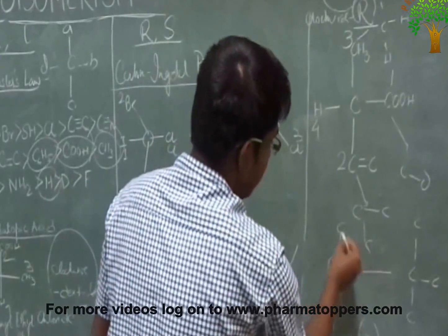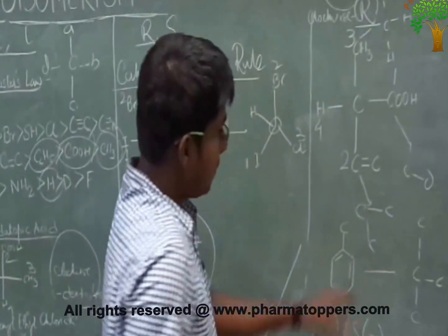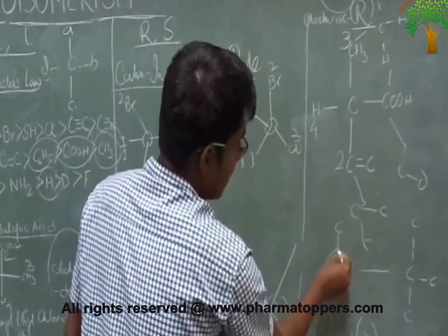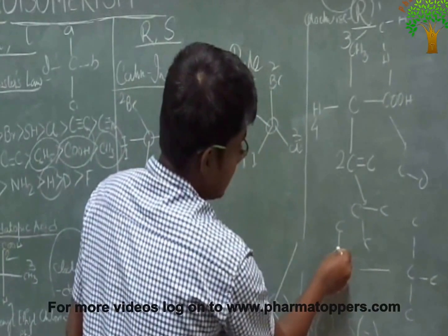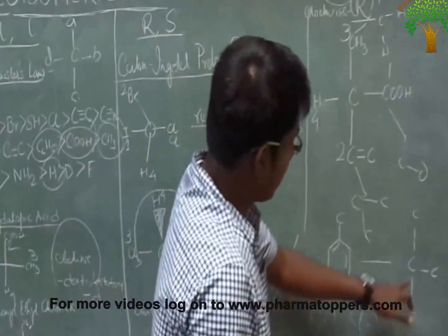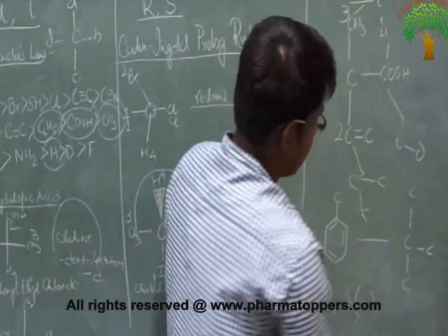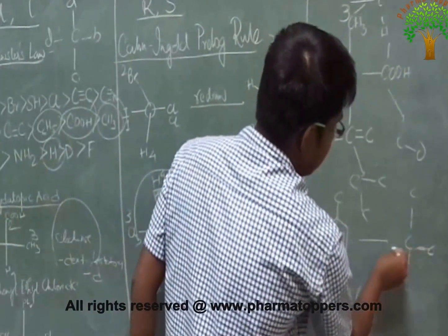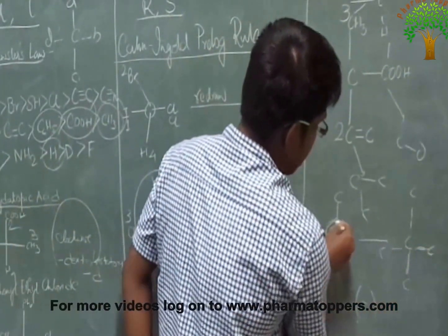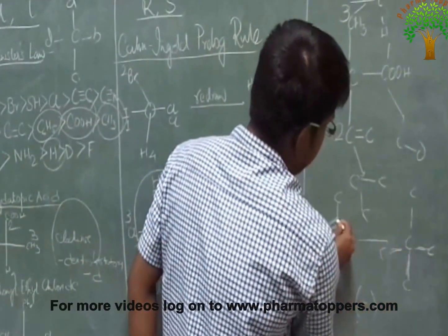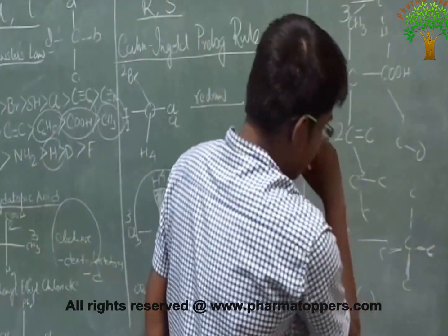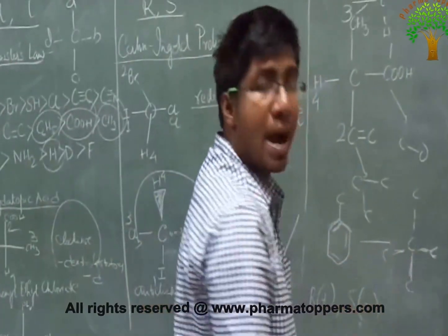Similarly, if we have a phenyl group attached, that carbon is attached to the ring carbon, which has a double bond and a single bond. So you can write one carbon attached to three carbons (due to the double bond phantom atom rule). The phenyl group thus has high priority, giving R designation in such cases.